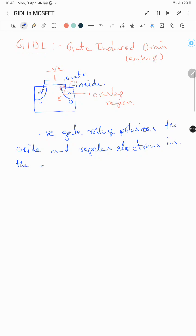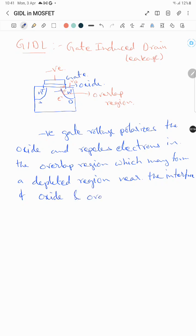In the overlap region, a depleted region may form near the interface of oxide and the overlap drain region. This region will be depleted of electrons.